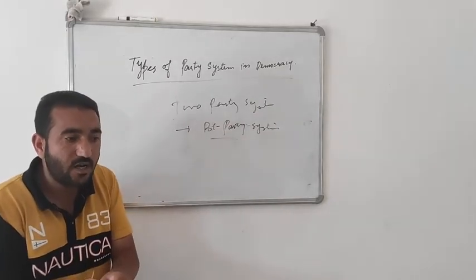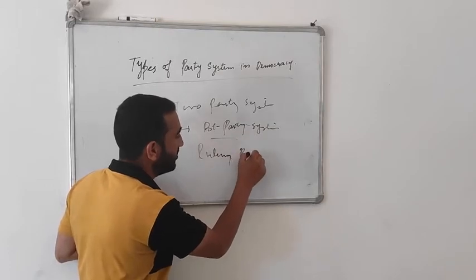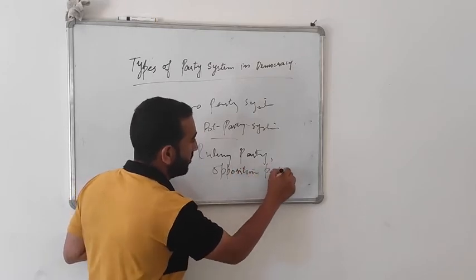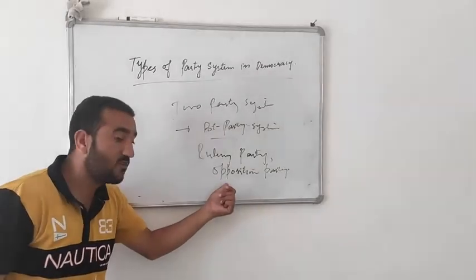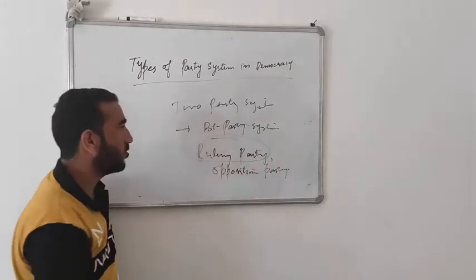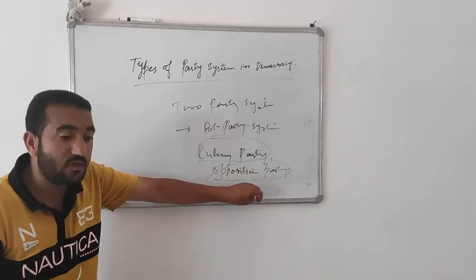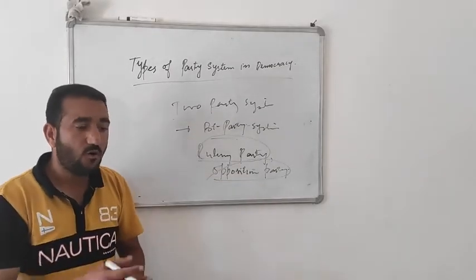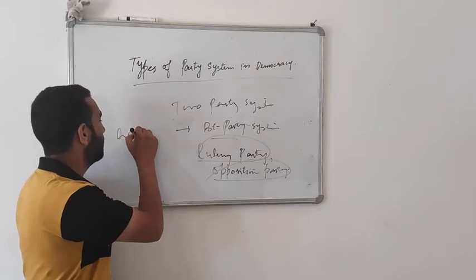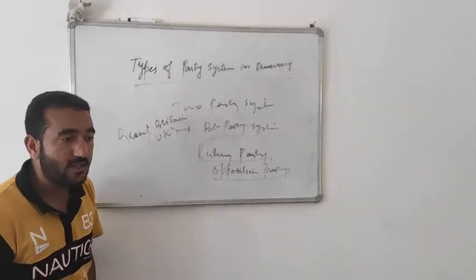In a two-party system, one party becomes the ruling party and the other becomes the opposition party. Note that the single-party system outlaws the opposition, but in a two-party system, the opposition has a role to play. Examples of two-party systems include UK, USA, Australia, and Canada.